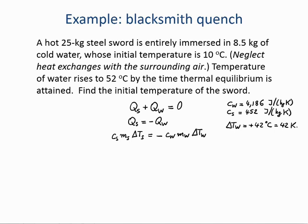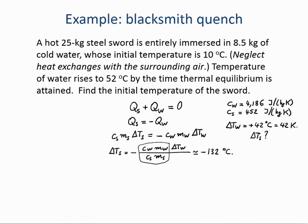We want to find the temperature change for the steel. Solving for delta T_s: it equals negative C_water times M_water times delta T_water, divided by C_steel times M_steel. Plugging in the numbers, C_w times M_w over C_s times M_s is roughly 3.15, giving delta T_s equals negative 132 Kelvin or Celsius degrees, since it's a temperature difference. So the initial temperature of the sword was 132 degrees above its final temperature of 52 degrees, giving an initial temperature of 184 Celsius degrees.